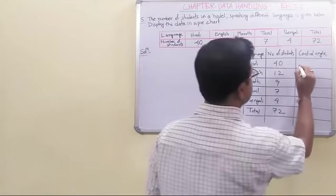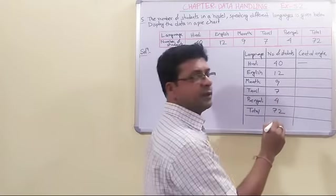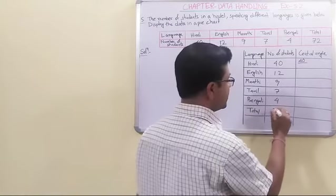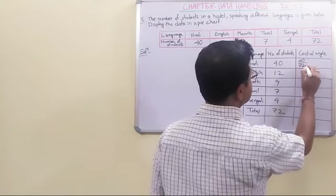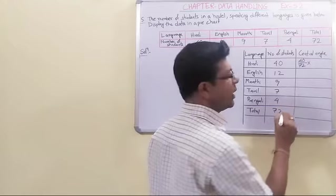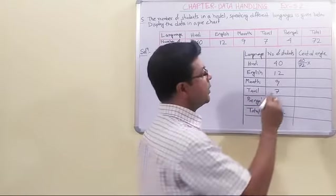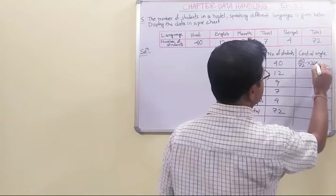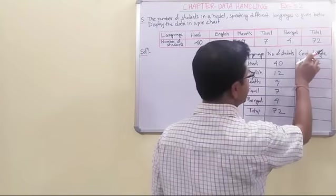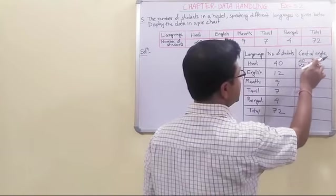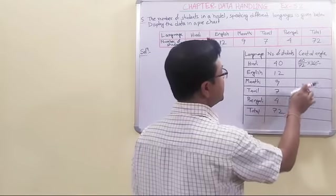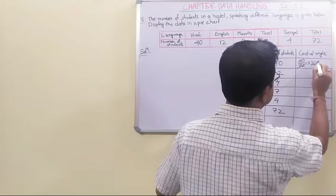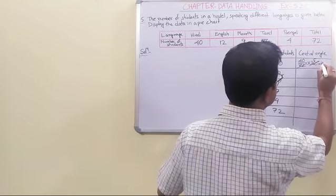Now, how to make the central angle? At first, we make the fraction. This 40 out of 72. This is converted into angle, central angle, how? By multiplying by the complete angle, that is 360 degrees. Always the total into 360 degrees. Any sum where we have to find the central angle. Now, let us find it all. If we cancel, this is 5. So this is 200 degrees.